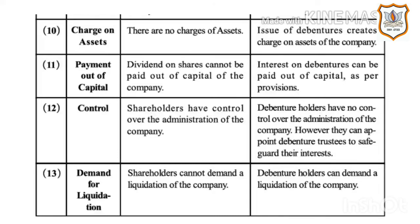Twelfth point — Control: Shareholders have control over the administration of the company; however, they can appoint debenture trustees to safeguard their interests. Thirteenth point — Demand for Liquidation: Shareholders cannot demand a liquidation of the company, but debenture holders can demand a liquidation of the company.